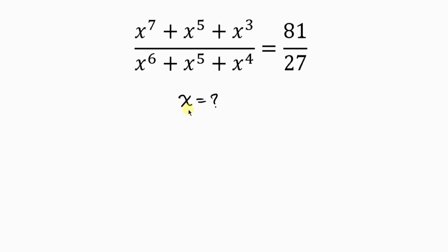Let's find the value of x, given that x to the 7 plus x to the 5 plus x to the 3, all over x to the 6 plus x to the 5 plus x to the 4, is equal to 81 over 27. Our first step will be to simplify.